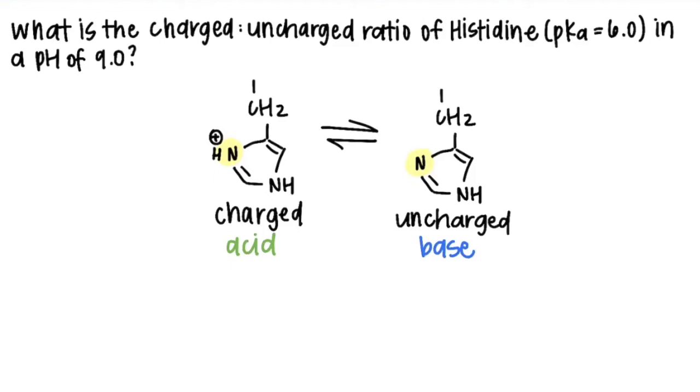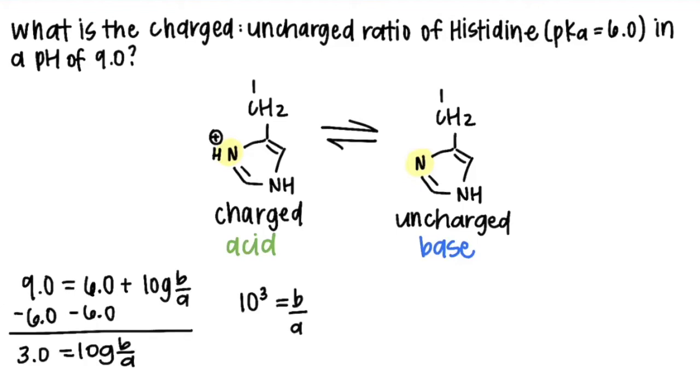I'm just going to plug in what I know, subtract six over, get that, and then I take the log of both sides. So I get 10 to the 3 as the base to acid ratio, and I'm going to go ahead and rewrite that.